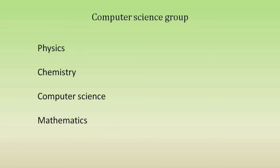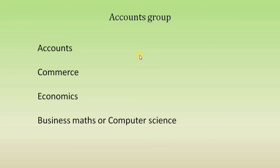It is easy to say: Physics, Chemistry, Maths. You can do hard work. Physics is a little bit difficult, Maths is a little bit difficult, Chemistry is a little bit difficult, Computer Science is a little bit difficult. But you can do hard work. Let's talk about the science groups - biology groups and computer science groups.